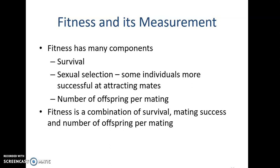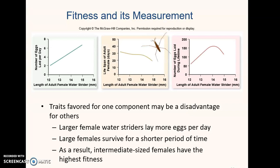A good example of the number of offspring per mating is large female frogs, fish, and spiders, which lay more eggs than smaller individuals. To calculate fitness, we have to take into account all three factors: survival, mating success or sexual selection, and the number of offspring produced per mating. We can't predict fitness from just one component.